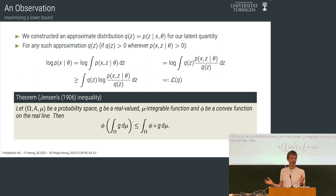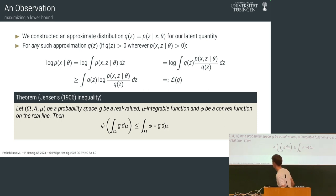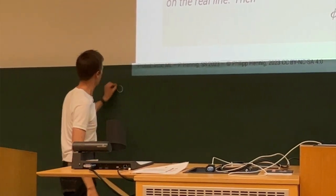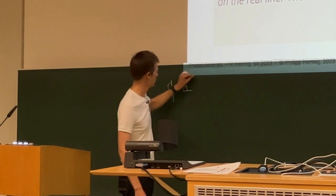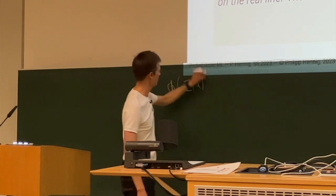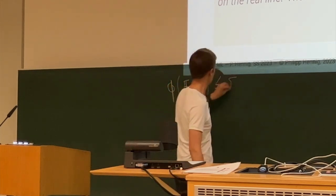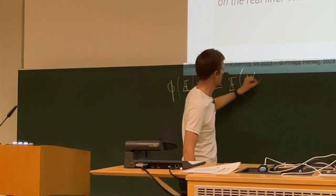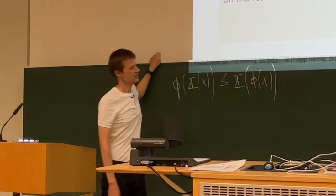Jensen's inequality says: if you have a convex function phi, then an expected value under some probability distribution of that function of a random variable satisfies: phi(E[X]) ≤ E[phi(X)]. Here it is again in a more general form — it's a generalization of a mean-value type theorem you probably saw in first-year math. If you have a convex function, for any two points, the line through them lies above the curve.